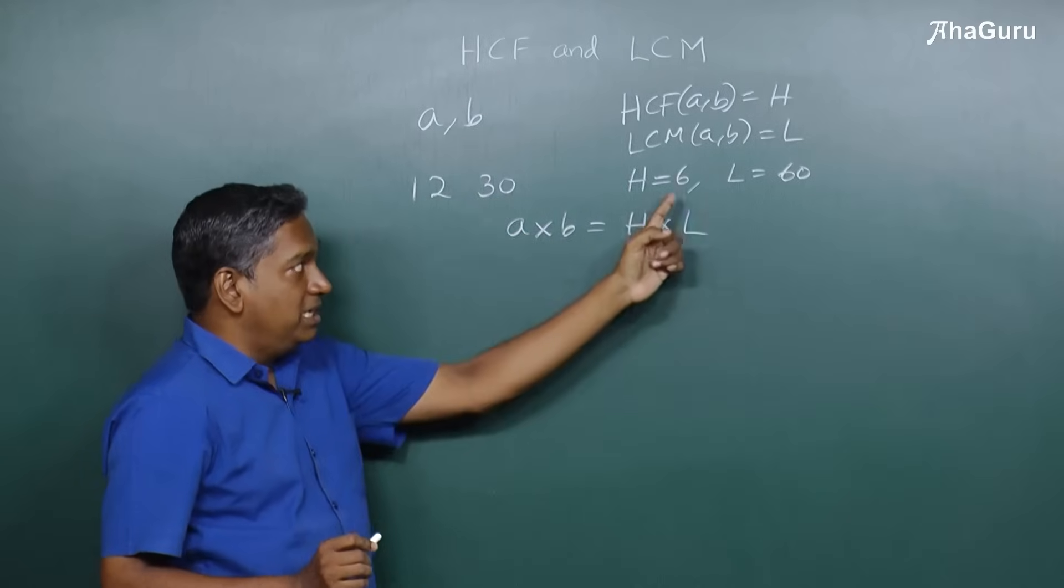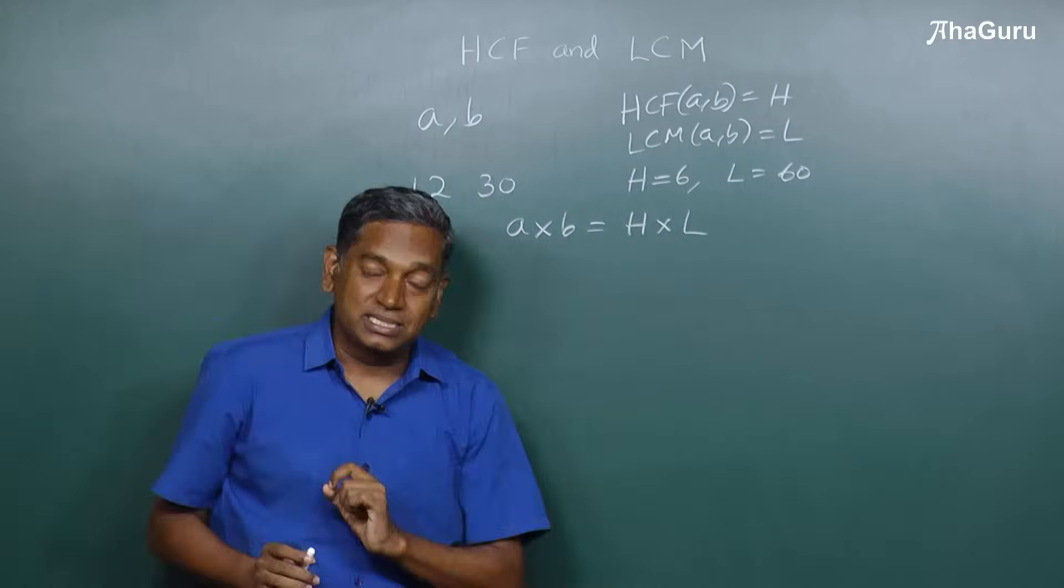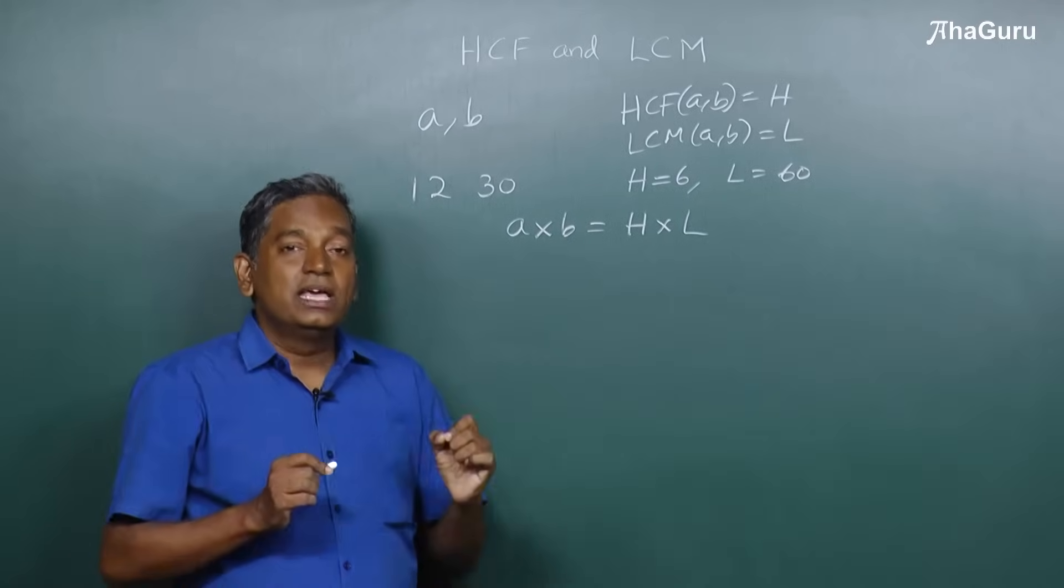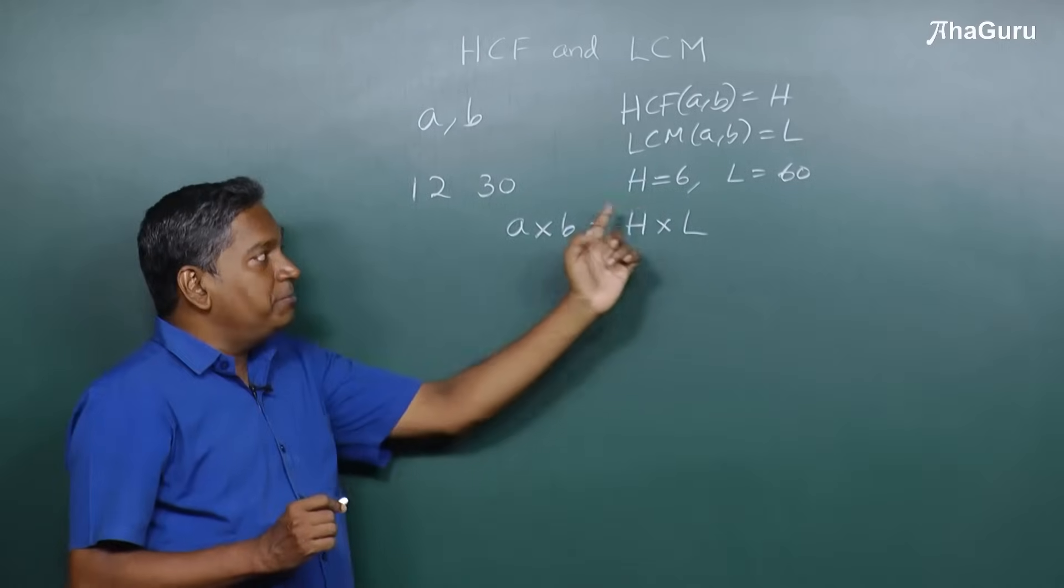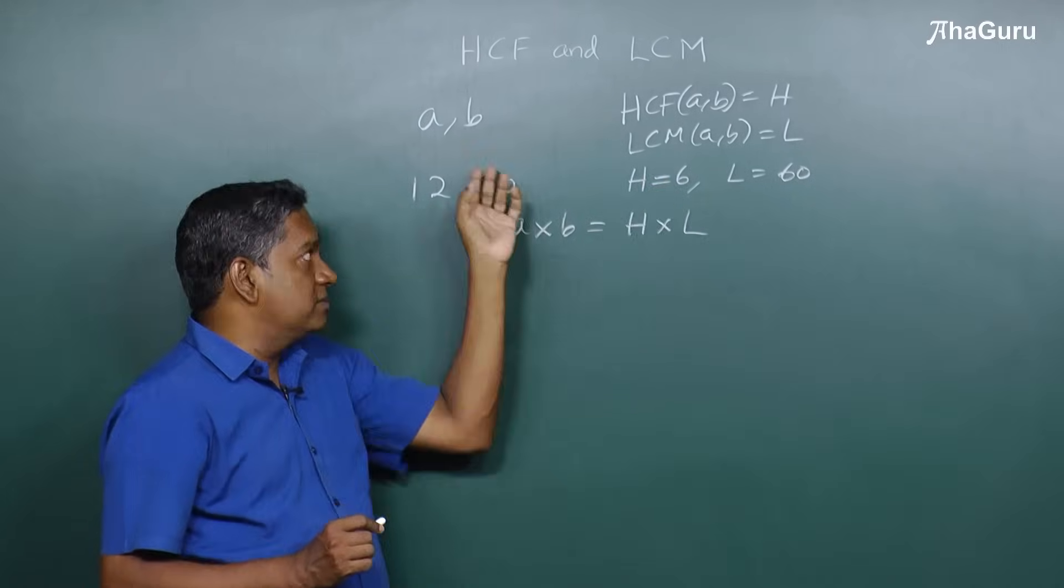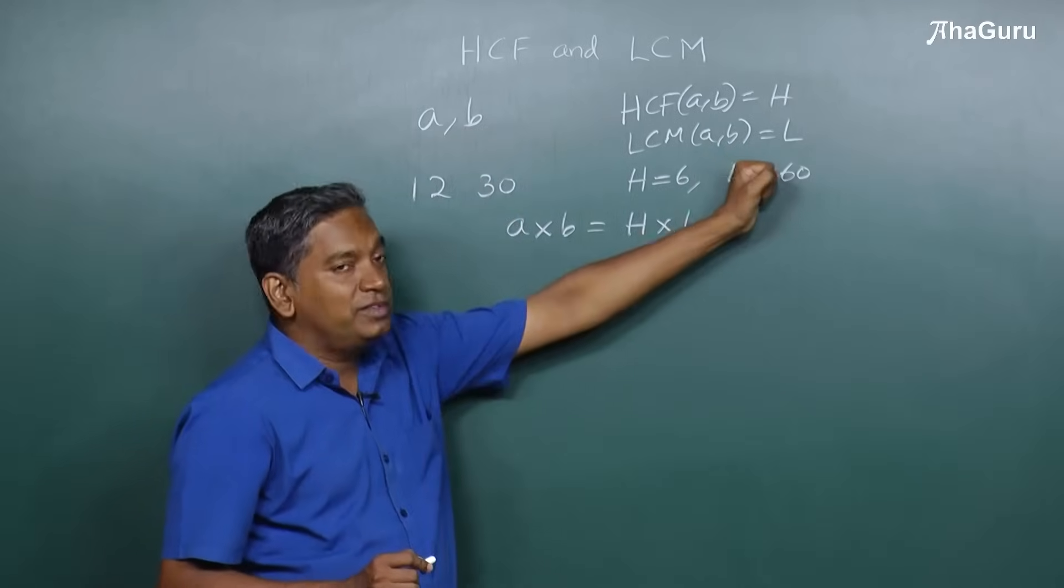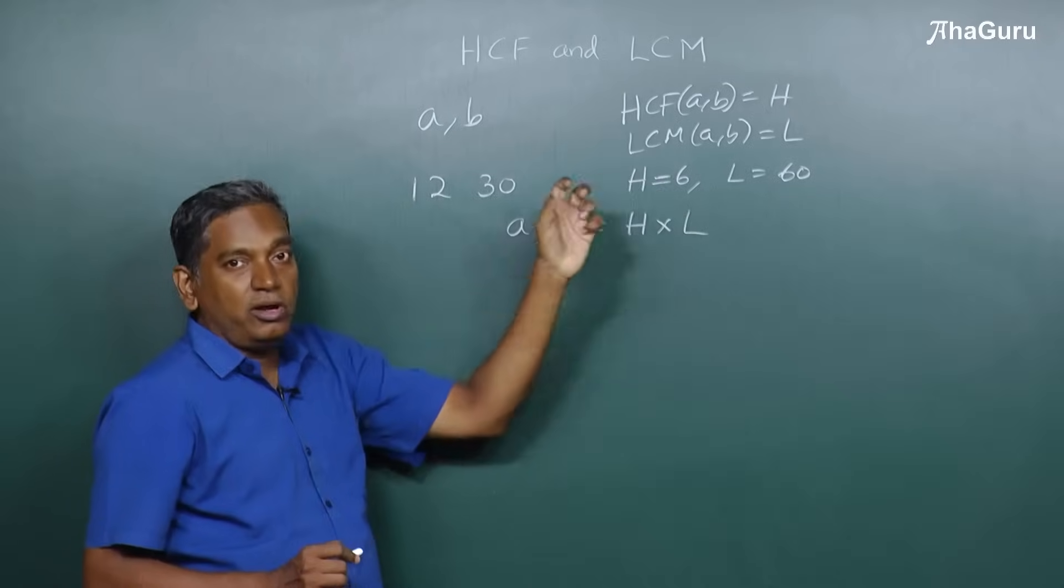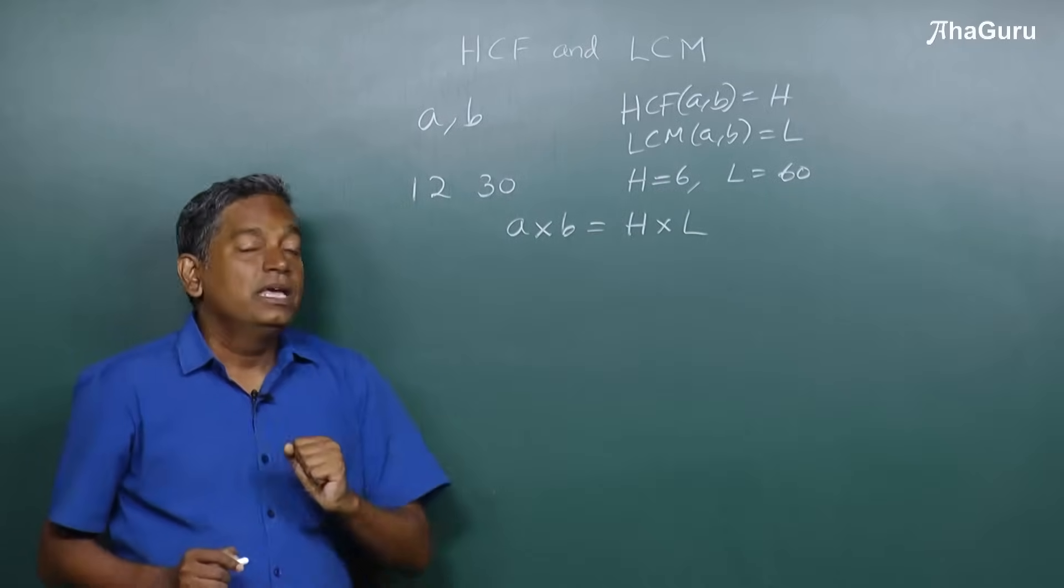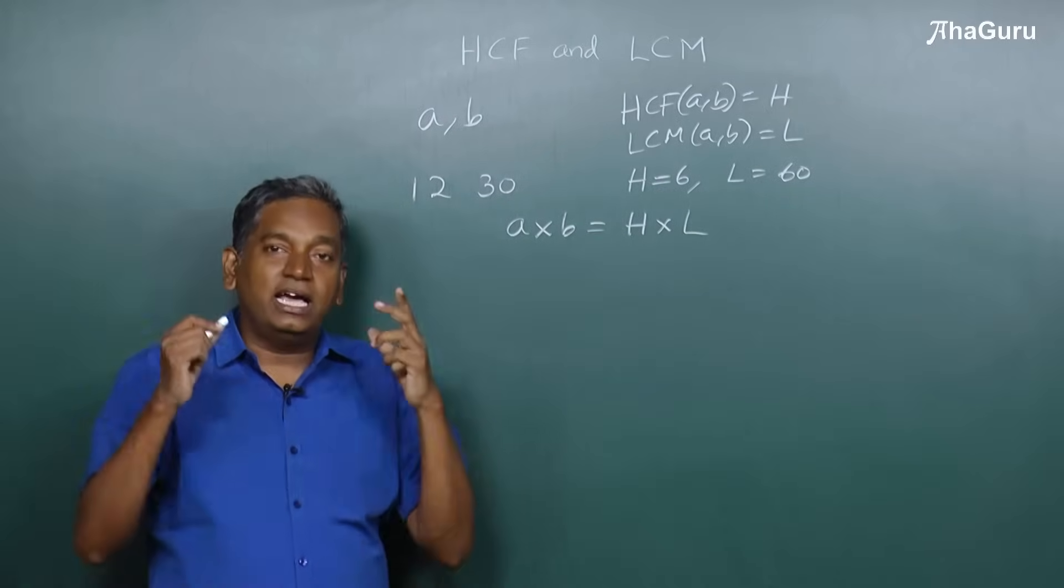Of course you can verify this: 12 into 30 is 360, 6 into 60 is also 360. The reason this is true is because the HCF is obtained by taking common factors when you prime factorize 12 and 30, and the remaining numbers will form part of the LCM, so when you take the product they will match.